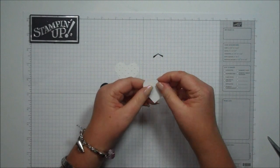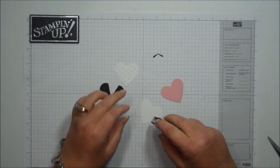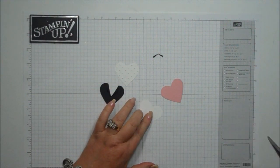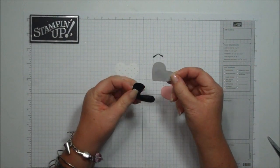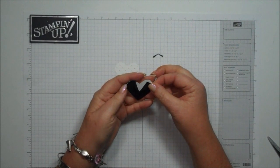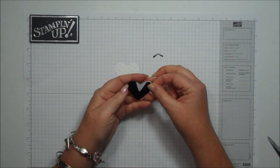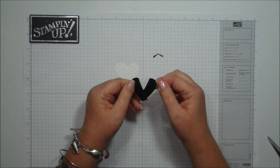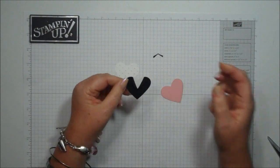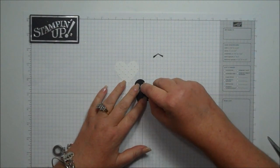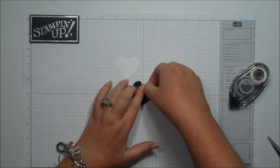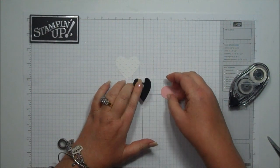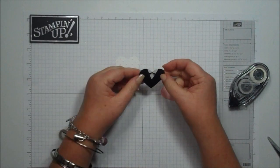Then you're going to take your whisper white heart, the smooth one, and you're just going to go ahead and put some adhesive on that, and then you're going to line this up behind your black one. Just like that. Isn't that cute? And then you just go ahead and add some adhesive, just a tiny little bit, and then add your bow tie. Oh my gosh, love it.